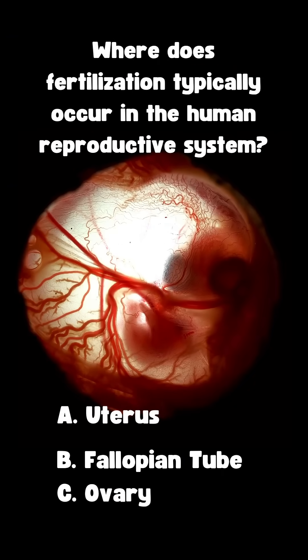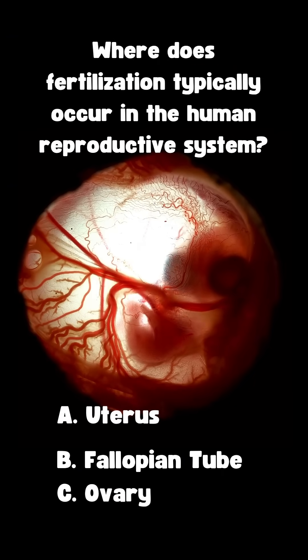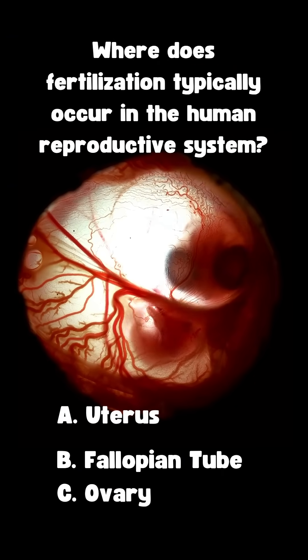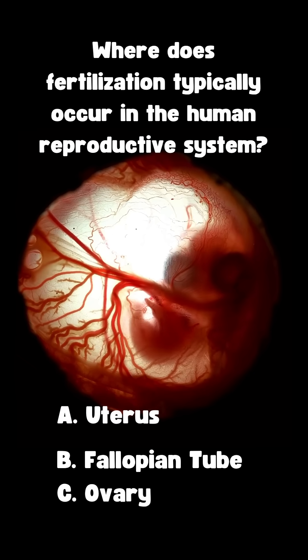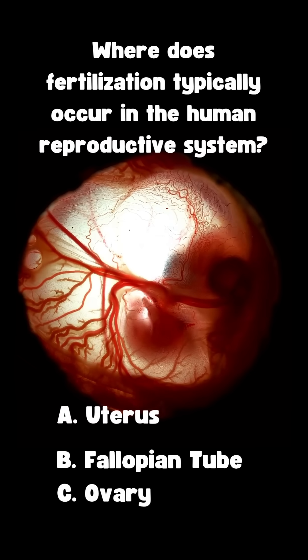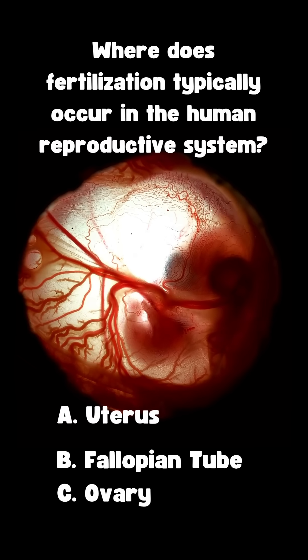Where does fertilization typically occur in the human reproductive system? Fallopian tube.